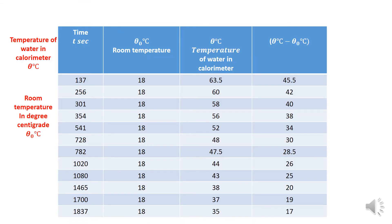Now the table starts. This column is the time in seconds. This is the room temperature at that time, which is a constant because the experiment was done in the room and room temperature was constant. This is the temperature of the water in the calorimeter. At 1337 seconds this was the reading, and this is the temperature difference — subtract room temperature from the water temperature. All these temperatures are in degrees centigrade.